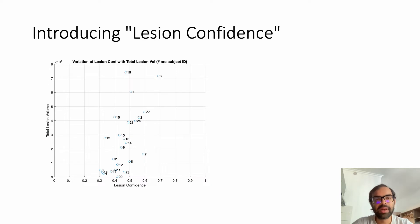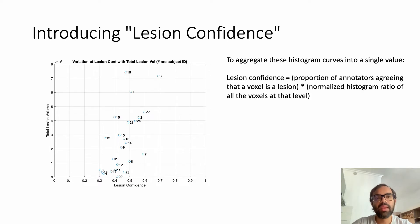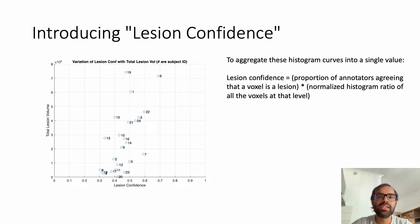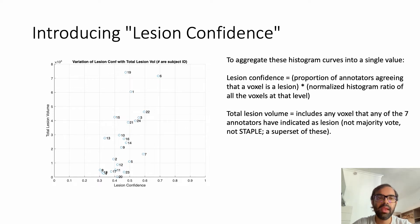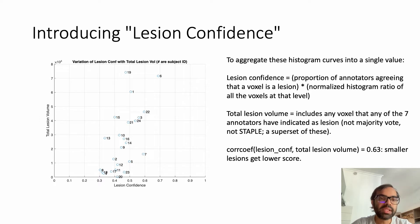So how do we compare these histograms and come up with a quantitative measure of data uncertainty? Here I introduce a value called lesion confidence, which is the product of the proportion of annotators agreeing that a voxel is a lesion — one out of seven, two out of seven, up to seven out of seven — multiplied by the normalized histogram ratio of all the voxels at that level. The vertical axis of the scatter plot on the left is the total lesion volume, which includes any voxel that any of the seven annotators indicated as a lesion. For the 24 subjects in this dataset, we plot the locations and the correlation coefficient between this lesion confidence and the total lesion volume is 0.63, which indicates that smaller lesions get lower scores.